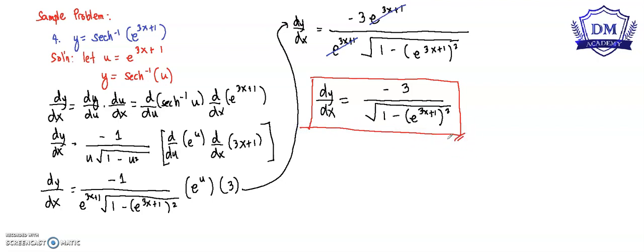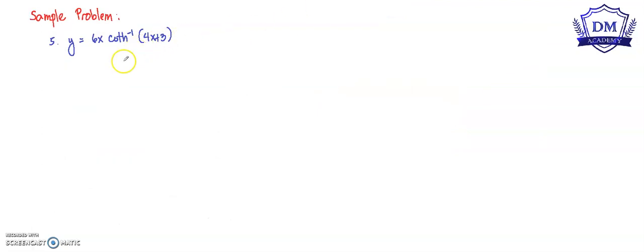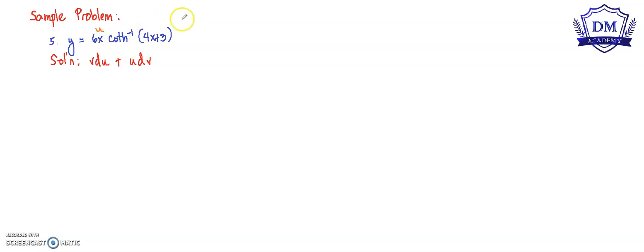Let's have another problem. Our function of y is equal to 6x times the inverse hyperbolic tangent of 4x plus 3. Our main solution for this is the product rule: v du plus u dv. We will let u be equal to 6x and we will let v be equal to the inverse hyperbolic tangent of 4x plus 3.